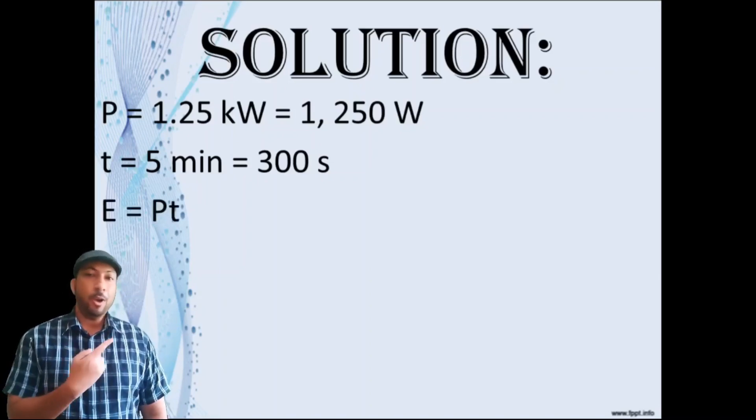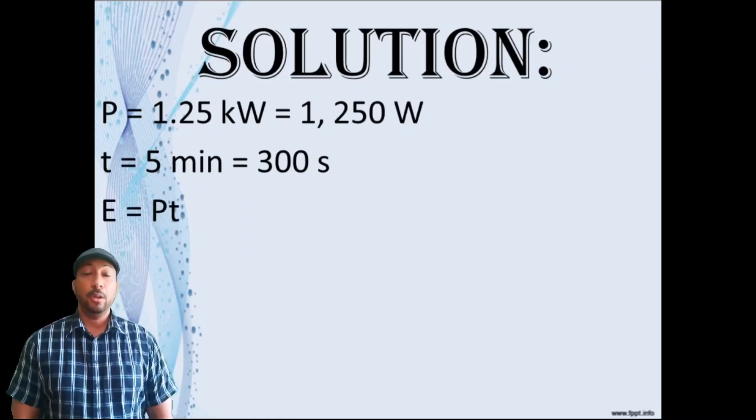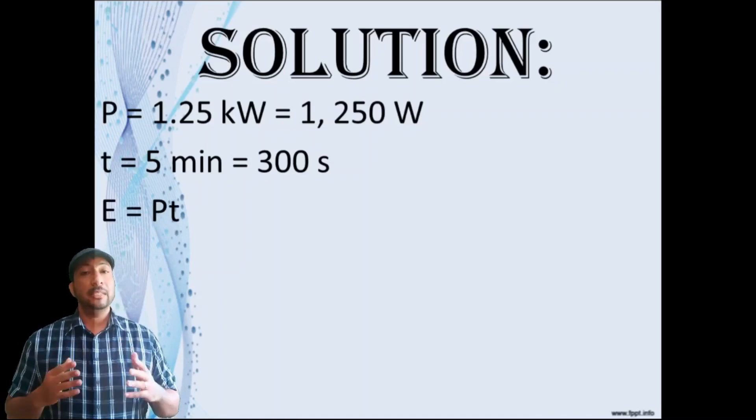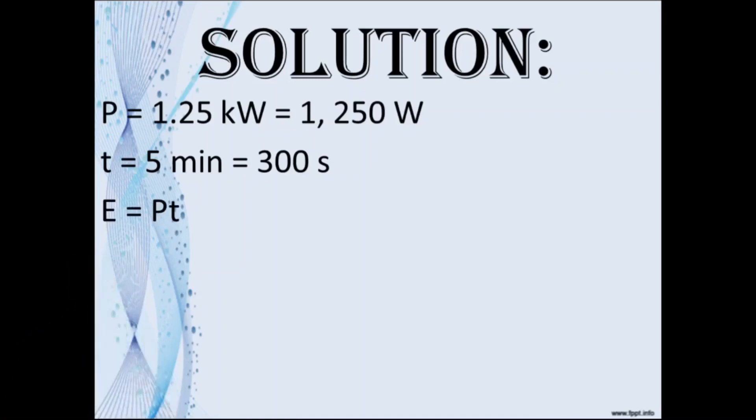Remember that power equals energy divided by time, which rearranged would be energy equals power multiplied by time. So the energy would be 1250 watts multiplied by 300 seconds, which gives you 375,000 joules.